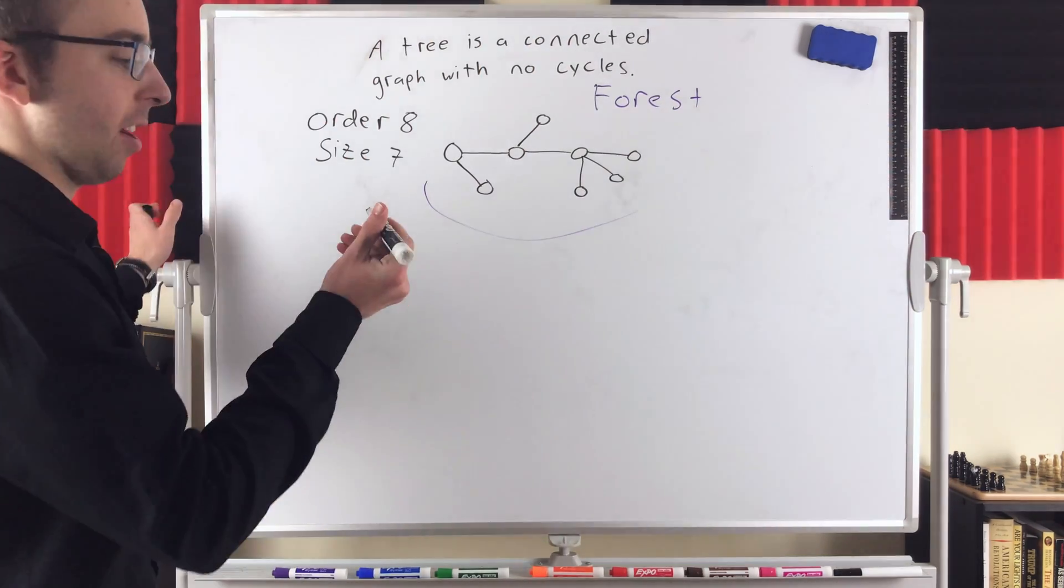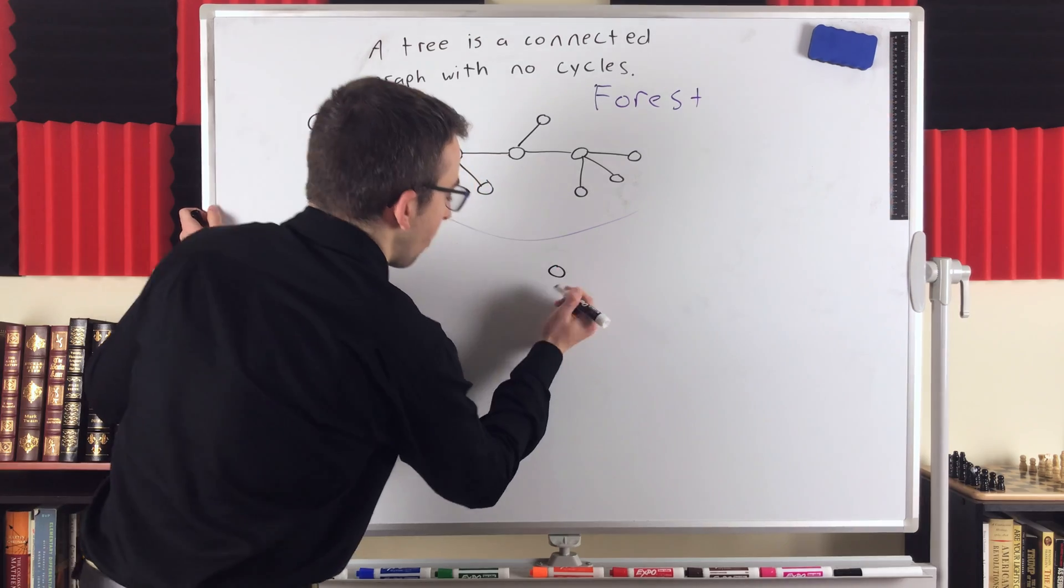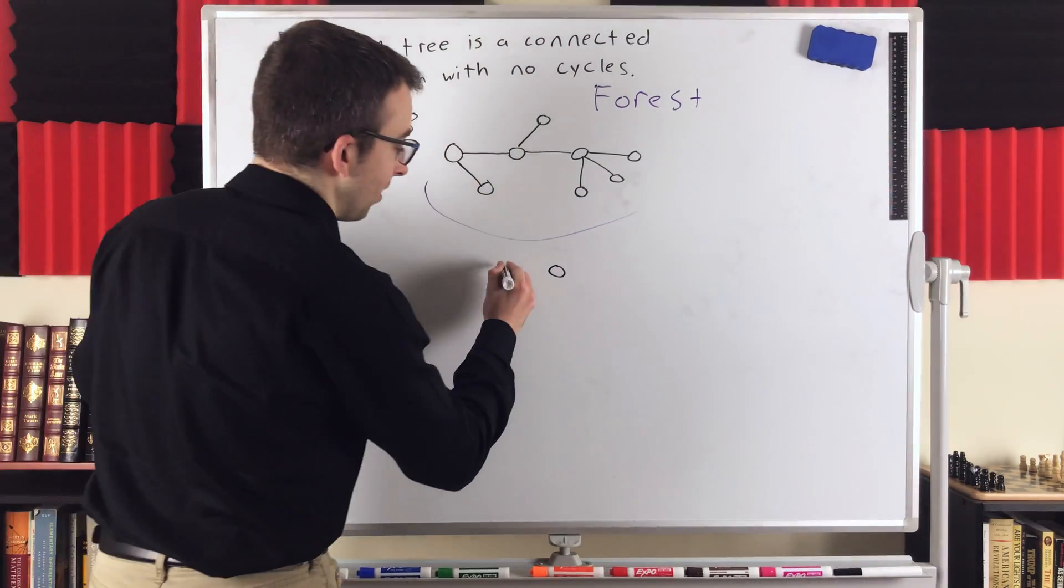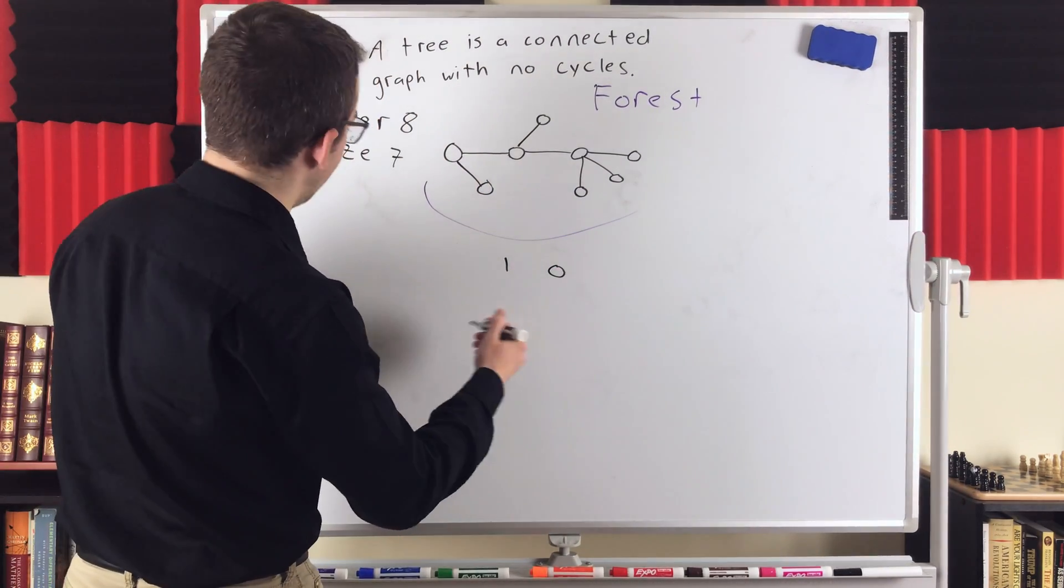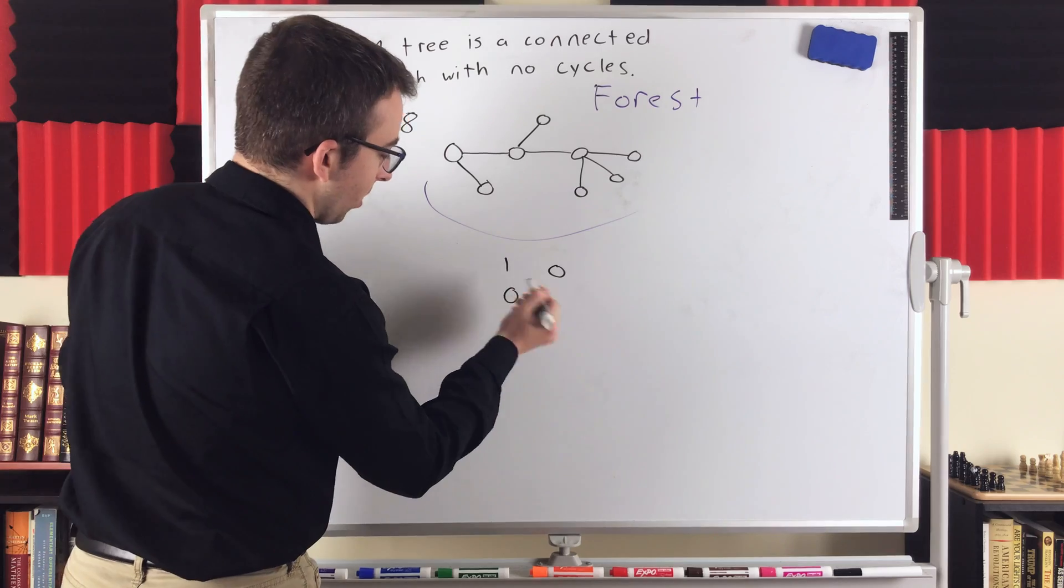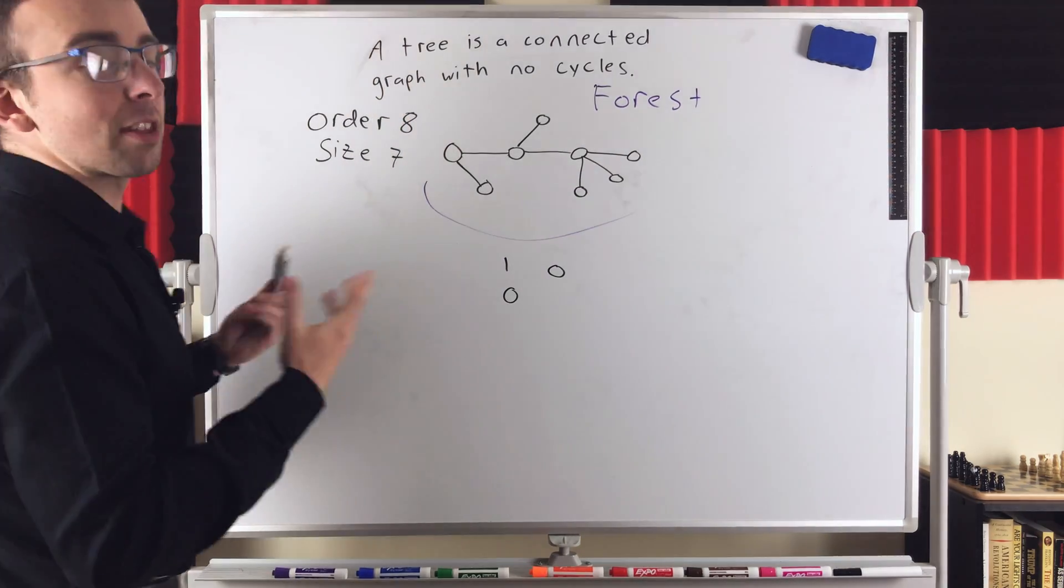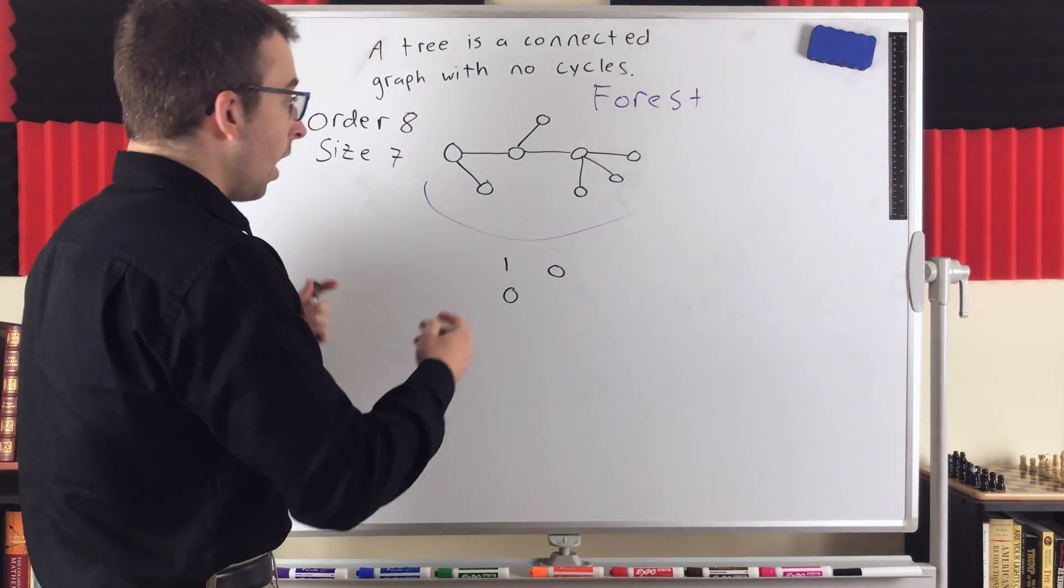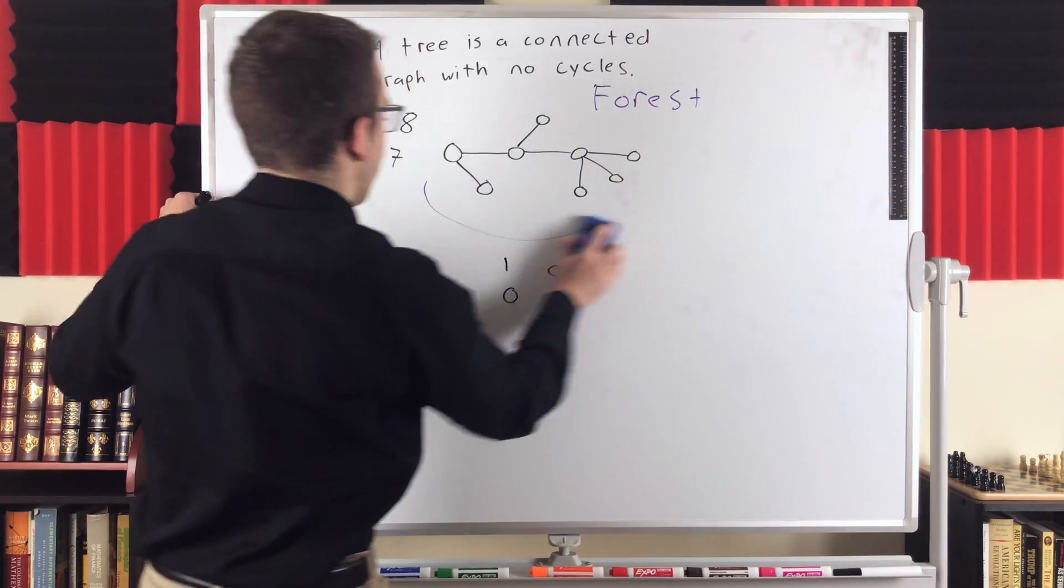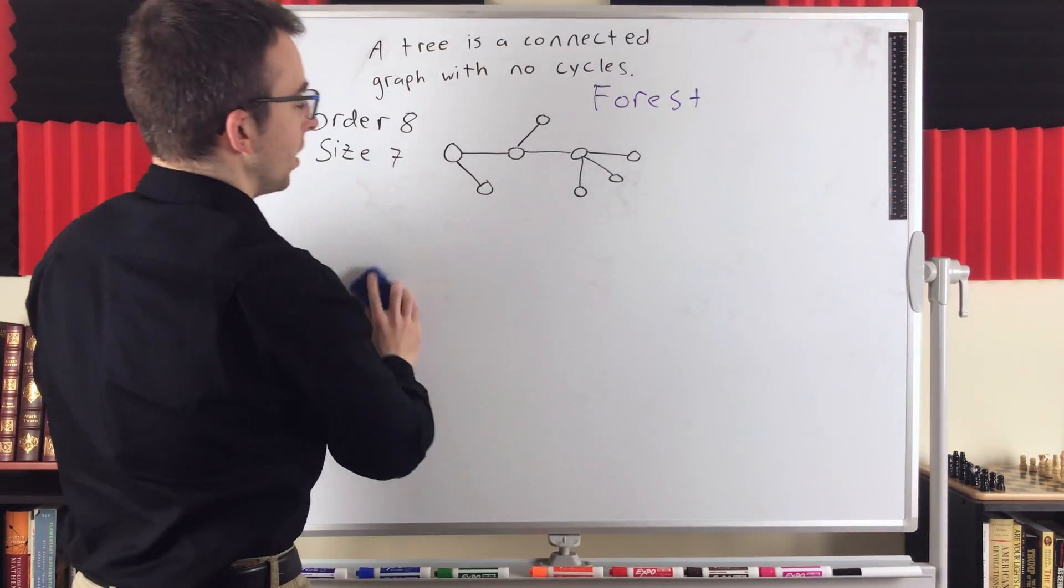Another kind of trivial example of a tree. Trivial graph on one vertex. We see its order is one. It's connected. Its size is zero. So it checks out, follows everything you would expect a tree to follow. So, another interesting definition of trees, another equivalent definition,